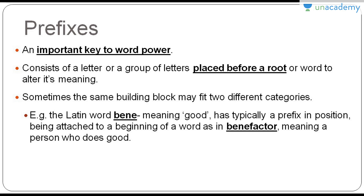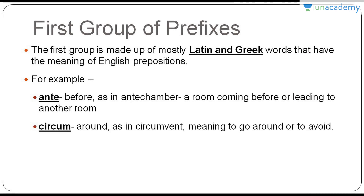Next we come to the types of prefixes. The first group comes from Latin and Greek words that have the meaning of English prepositions. For example, 'ante' means before, as in ante-chamber — a room coming before — or anterior, meaning shown before. The next prefix is circum, which means around. The word circumvent means to go around or to avoid.